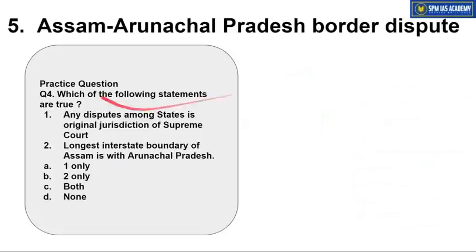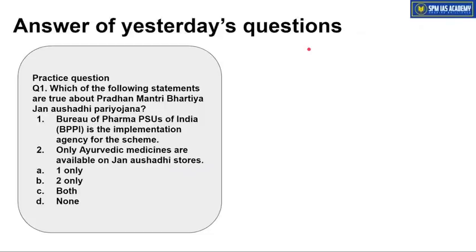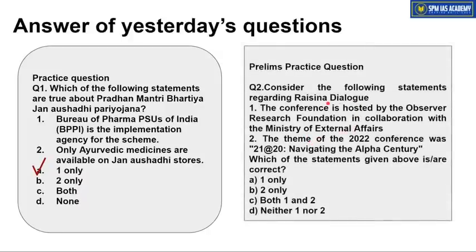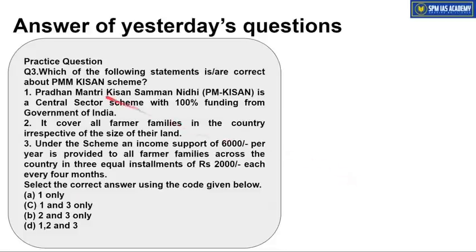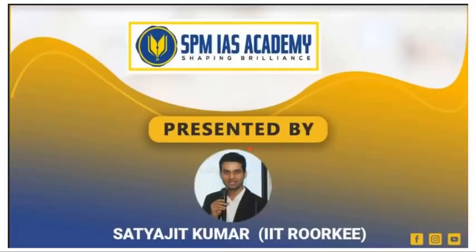Kal jo practice questions diye the unke answers dekhte hain. Pradhan Mantri Bharatiya Jan-Aushadhi Yojana: Bureau of Pharma PSUs of India is the implementing agency — correct. But ayurvedic medicines are available on Jan-Aushadhi stores — this is wrong, only generic drugs are the focus, not just ayurvedic. Correct answer: option A, one only. Raisina Dialogue: the conference is hosted by ORF — correct. But the theme of 2022 was not as stated — correct answer option A, one only. PM Kisan Scheme: 100% funding from central government — absolutely correct. It covers all farmer families — this is wrong. Income support of Rs 6,000 with equal installments of Rs 2,000 each — correct. Correct answer: option C. That's all from our side for today, thanks for watching.